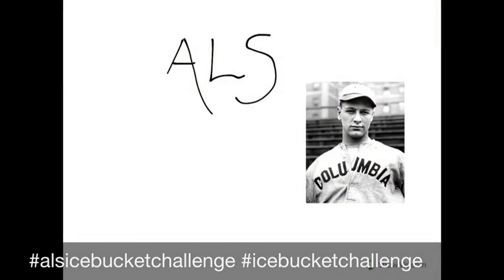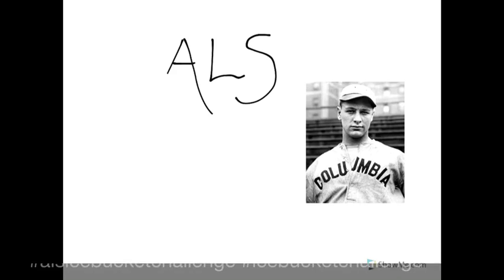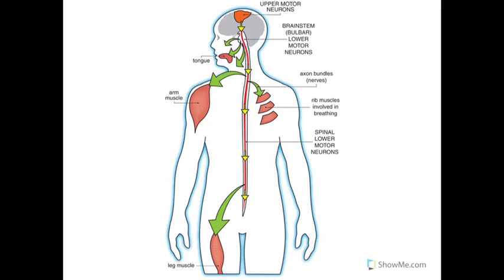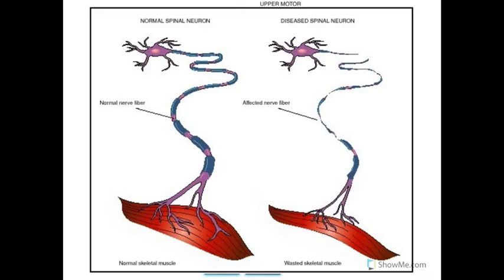Since I did the ALS Ice Bucket Challenge, I figured I would tell you guys a little more about the biology behind amyotrophic lateral sclerosis, or ALS, sometimes referred to as Lou Gehrig's disease, named after the baseball player Lou Gehrig. ALS is a neurodegenerative disease that affects your motor neurons, both in the brain and in your spinal cord. When these motor neurons die, the ability for your brain to control your muscles and their movement is lost. Here you can see two motor neurons — one which is normal and one which is diseased — and the comparison of the skeletal muscle.